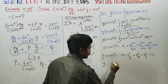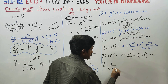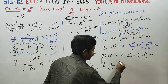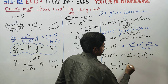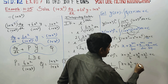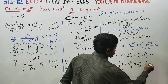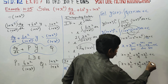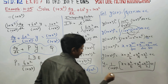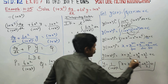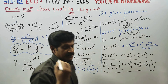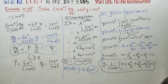The final solution is y is equal to 1 by 1 plus x cube whole square, multiplied by the bracket x plus x power 6 by 6 plus x power 4 by 4 plus x cube by 3 plus c. This is your final solution for this differential equation. This type is called a linear differential equation. Thank you.